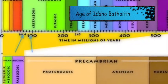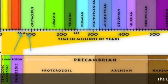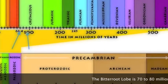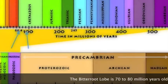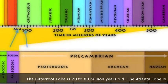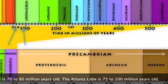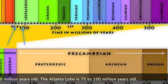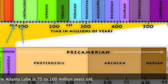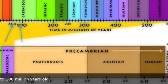Due to radiometric dating, we can restrict the age of the batholith from anywhere between 180 million years old, which is the late Triassic era, to 45 million years old, the Eocene era. The dominant age of emplacement was early to middle Cretaceous. The age seems to decrease going from west to east.